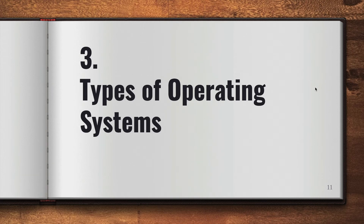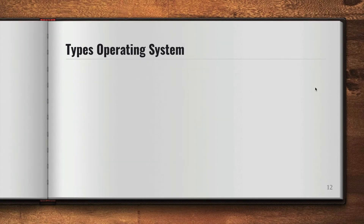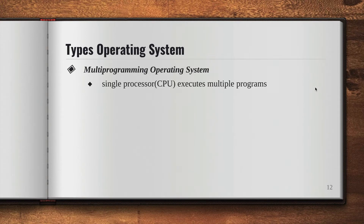We're going to discuss the different types of operating systems. We have the multi-programming operating system, wherein a single processor executes multiple programs. As we took an example in the earlier video, the processor is performing multiple tasks — that is your multi-programming operating system.